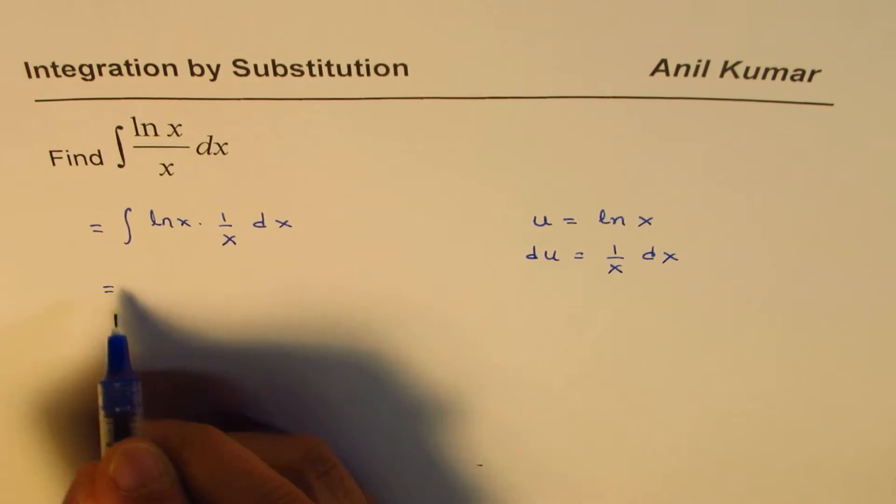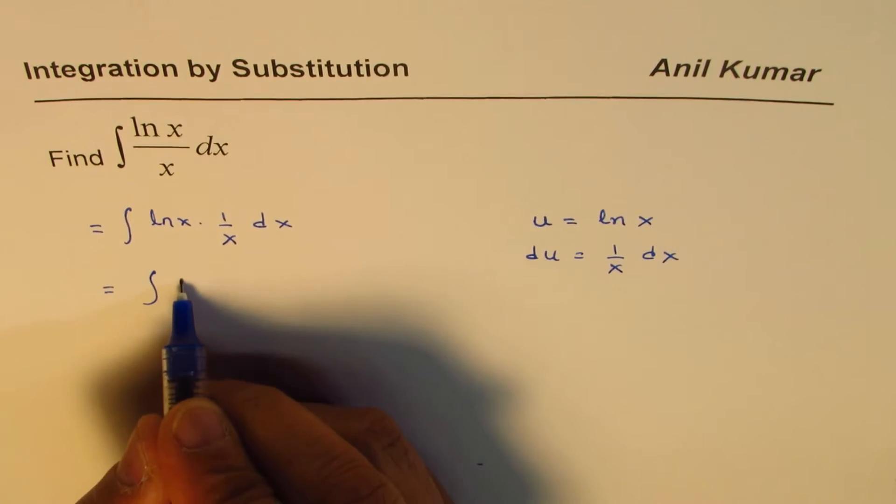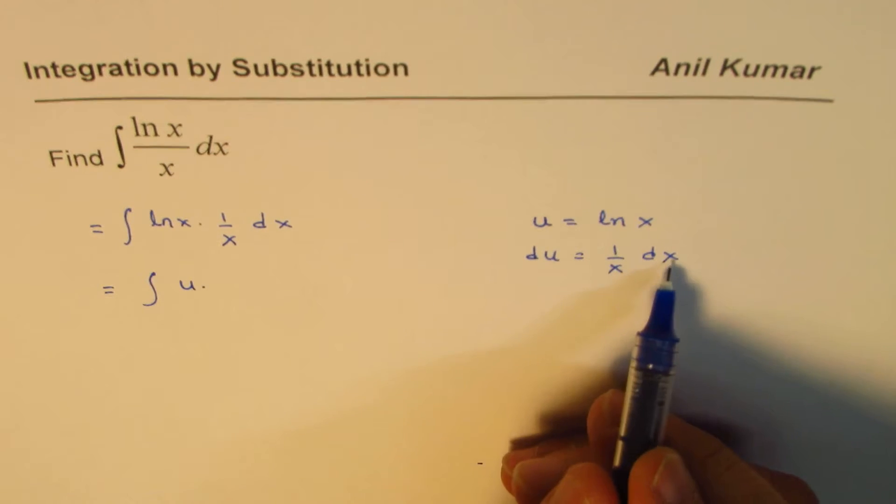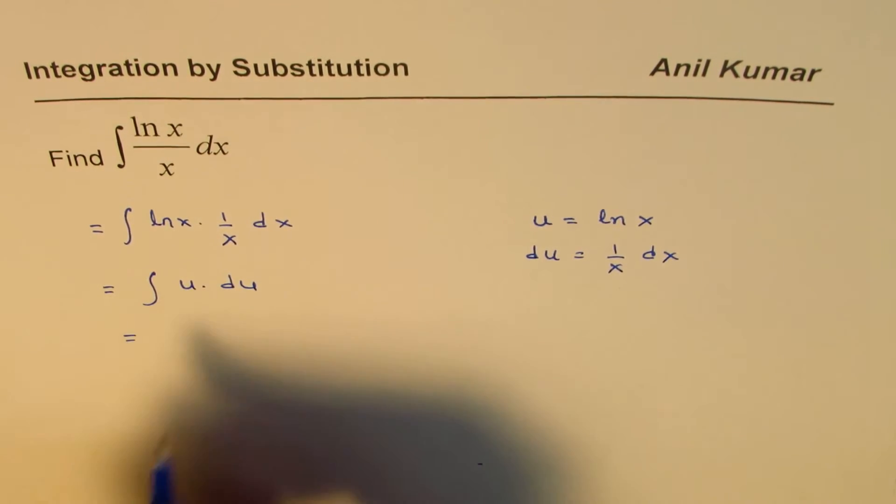Now, we can write the question as the integral of, instead of ln x, I can write u. And instead of 1 over x dx, I can write du. So, that gives you the solution, which is u squared over 2, plus c.